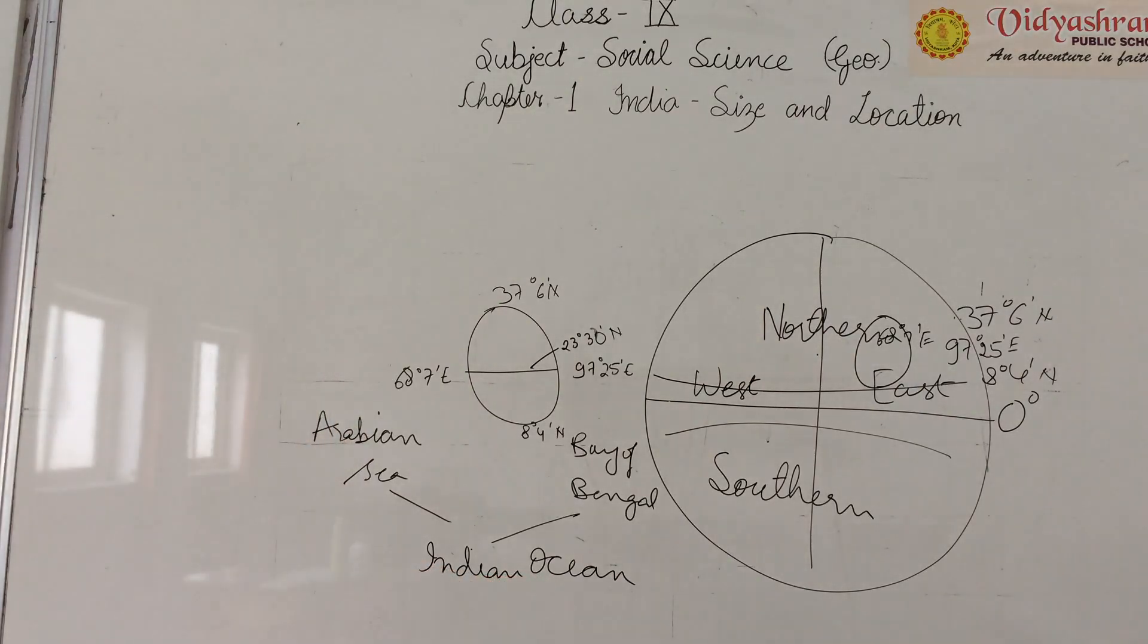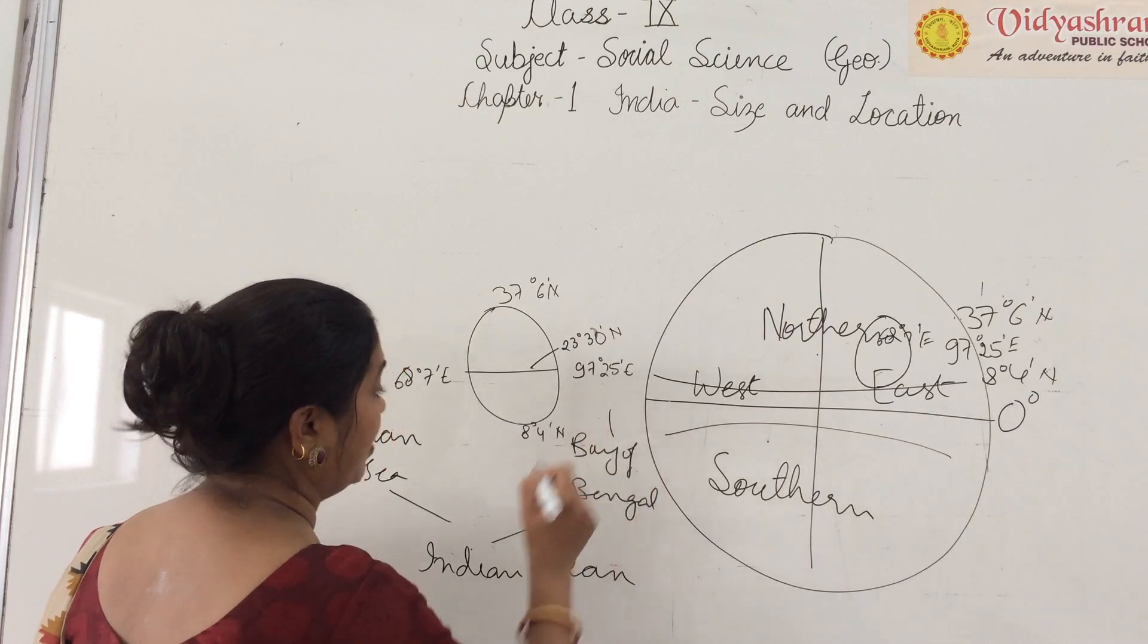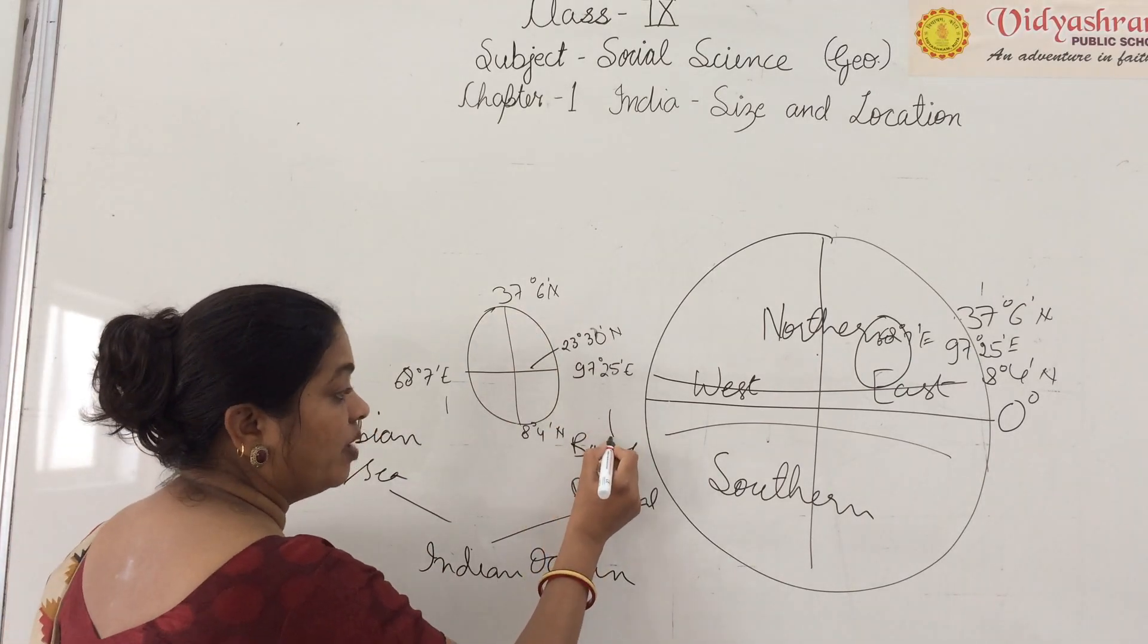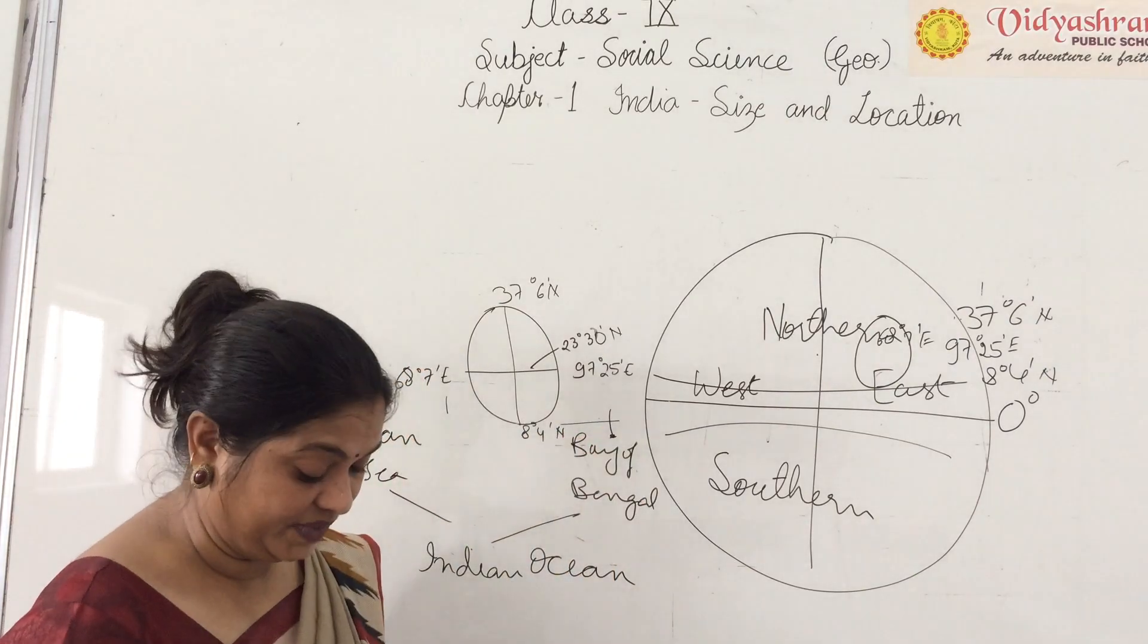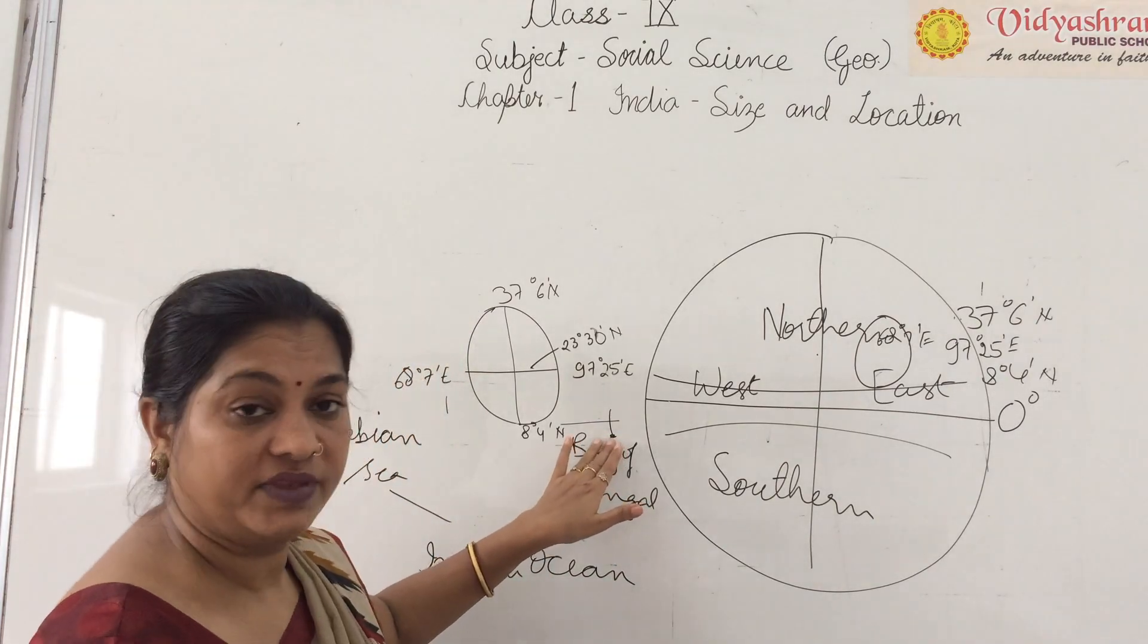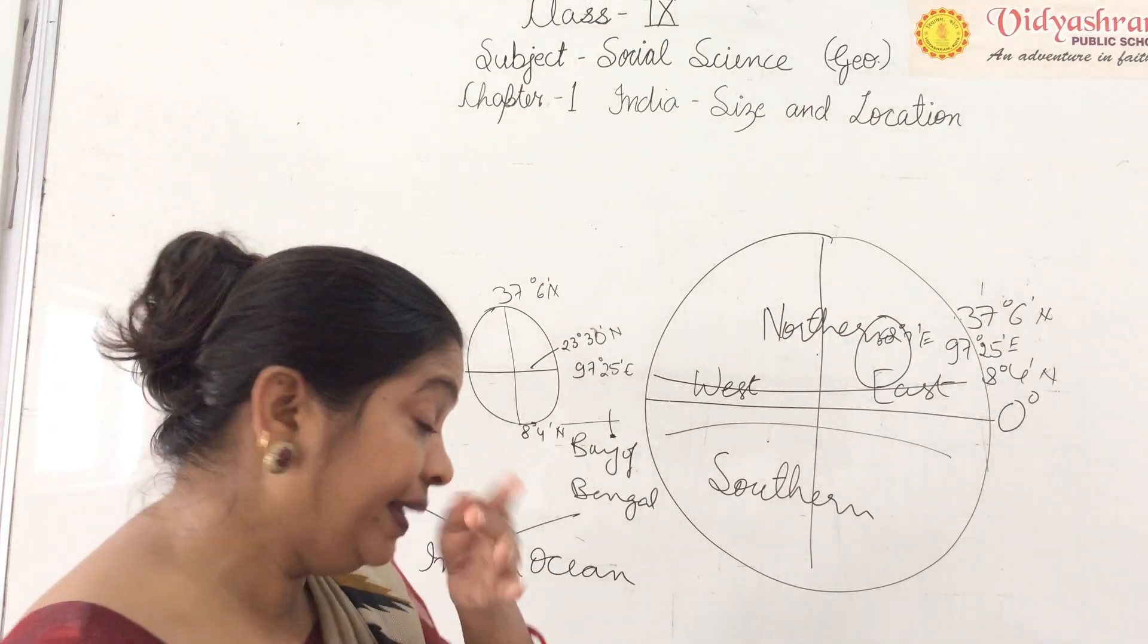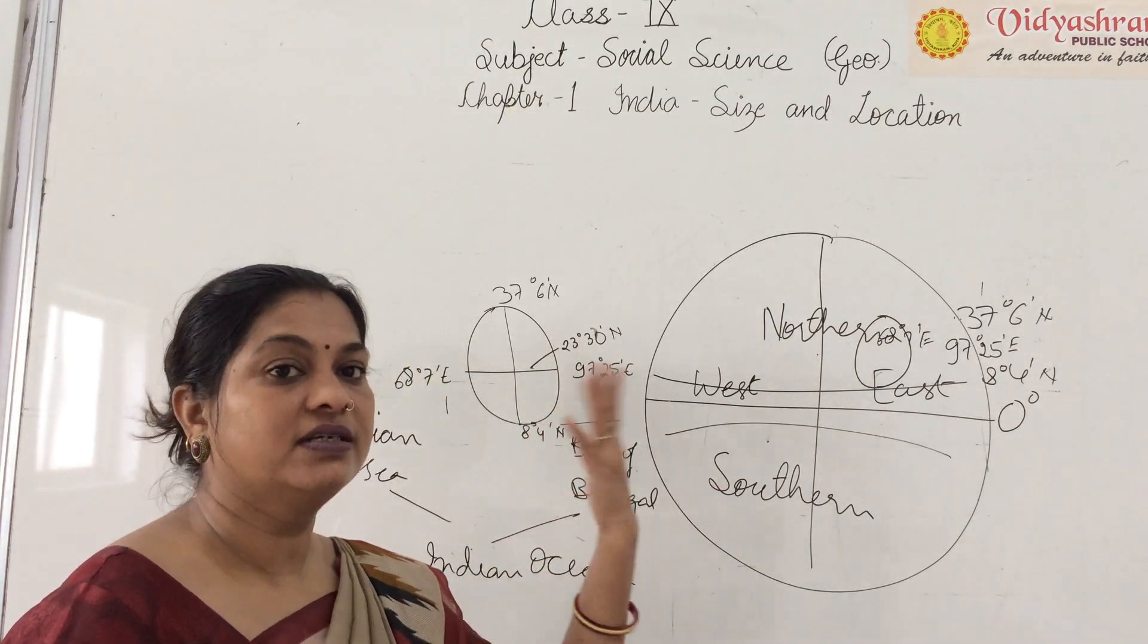One thing we have to remember is that this is India's mainland. If you check the southernmost point, the southernmost point of Indian mainland is Kanyakumari. But if we ask about India including islands, which one is Indira Point? Indira Point is the southernmost island of Andaman and Nicobar.